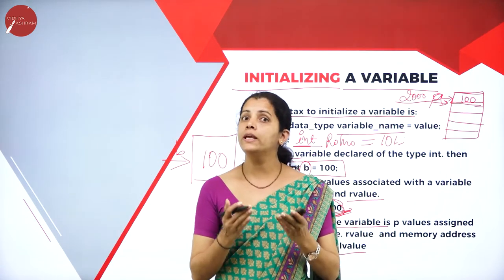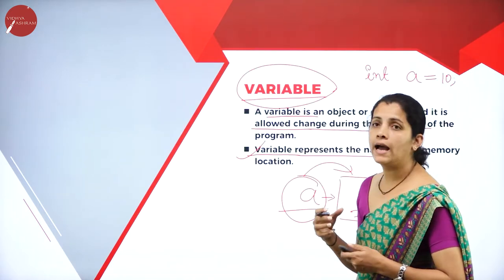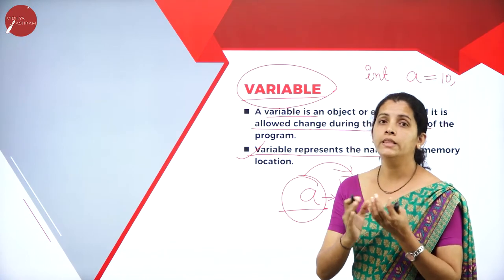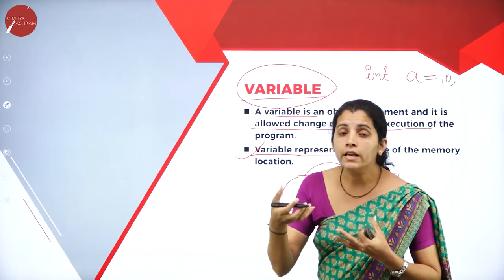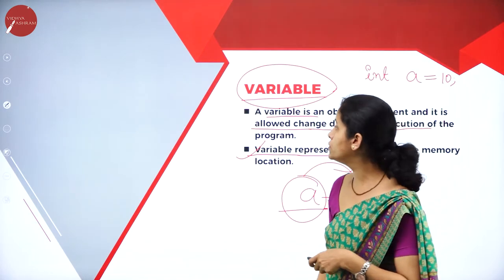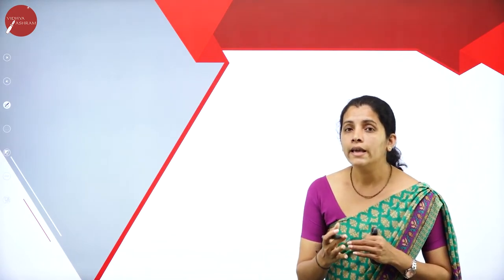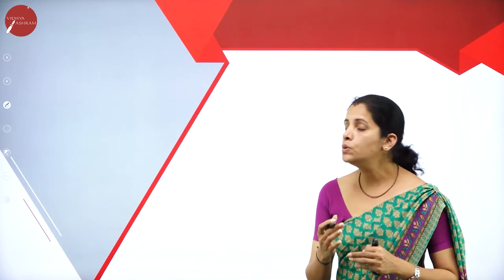Variables are nothing but objects, and as the name indicates, the value is going to change or vary during the execution of the program. To illustrate the use of variables, let me consider a simple example: write a program to find the sum of two numbers. According to the C++ structure, at the beginning we are going to have a documentation section.